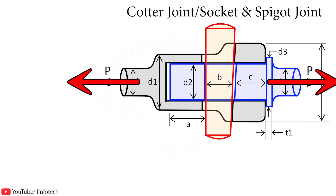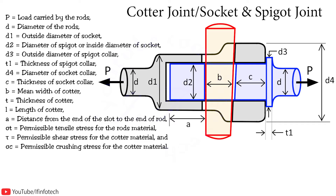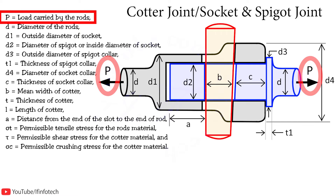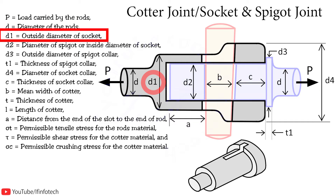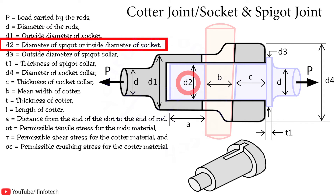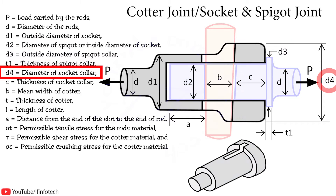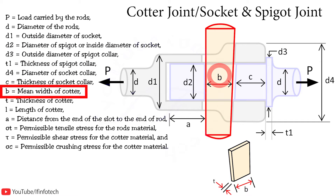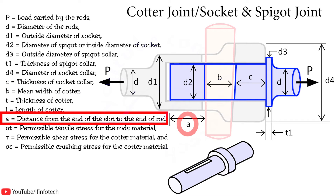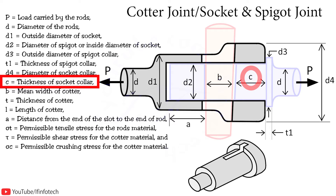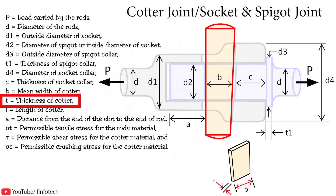The cotter joint is used for tensile load as well as for compressive load. The major dimensions are: diameter of rod denoted as small d; load P is applied to both sides. d1 is the outer diameter of the socket, d2 is the internal diameter of socket, which is also equal to the external diameter of the spigot. d3 is the diameter of spigot collar, d4 is the diameter of socket collar. b is the mean width of cotter, a is the distance from end of slot to end of spigot rod, c is the thickness of socket collar, and t is the thickness of cotter.